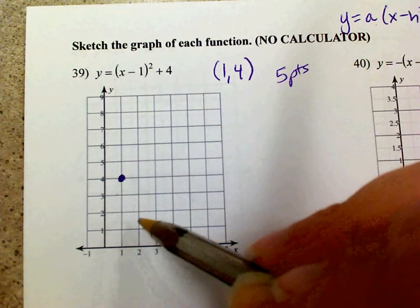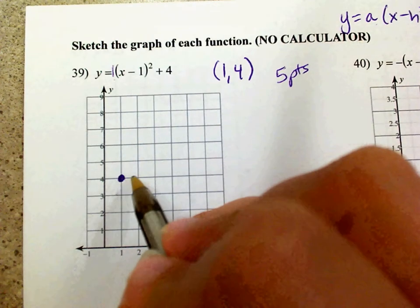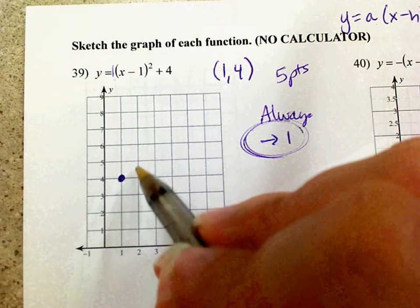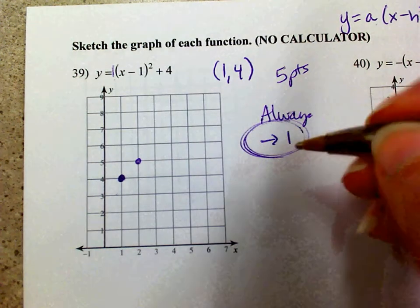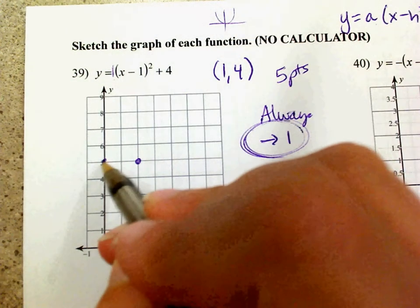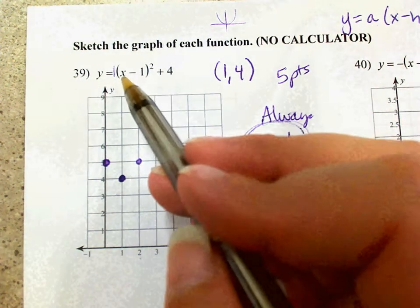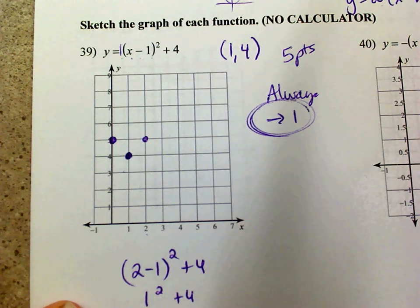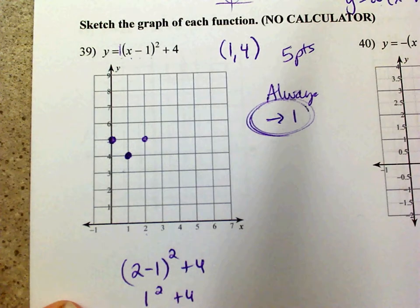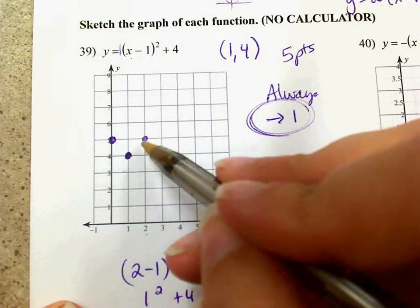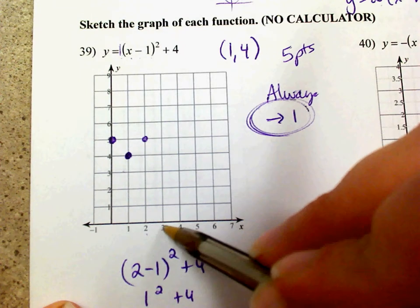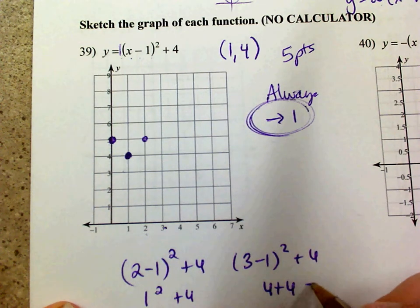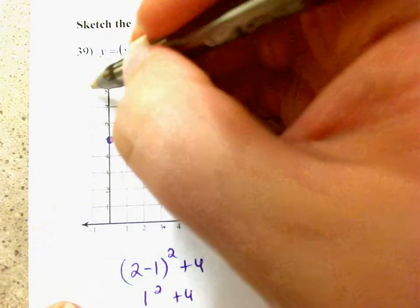You always go to the right one first, and whatever the leading coefficient 'a' is determines how high you go. So going right 1, I go up 1. Because parabolas are symmetrical, going left 1 also means up 1. If I plug in x equals 2: two minus one is one, one squared is one, one plus four is five — so at x equals 2, y equals 5. Then for x equals 3: three minus one is two, two squared is four, four plus four is eight. So at x equals 3, y equals 8, which means at x equals negative 1, y equals 8 as well.